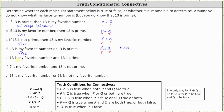For part E: 13 is my favorite number, and 13 is prime. The statement fits the form of P and Q. P and Q is true only when both P and Q are true. We know Q — 13 is prime — is true, but we don't know whether P — 13 is my favorite number — is true or false. Therefore, we don't have enough information to determine whether the statement is true.